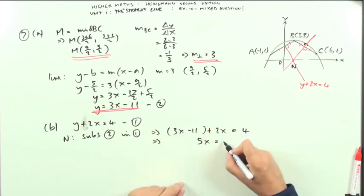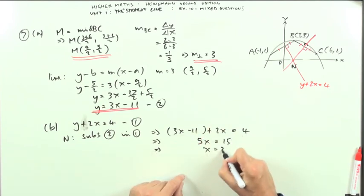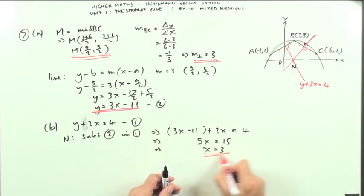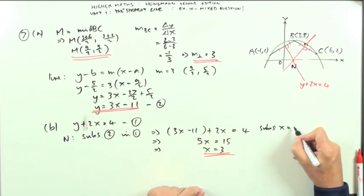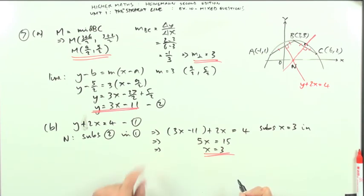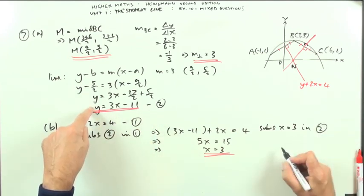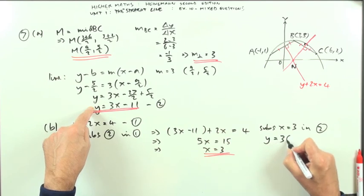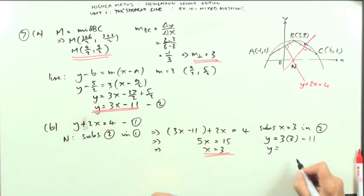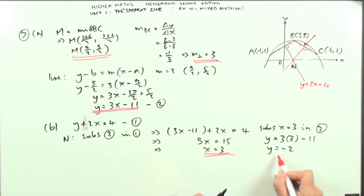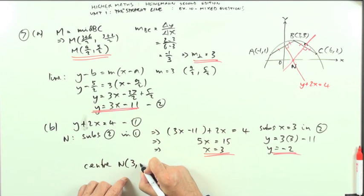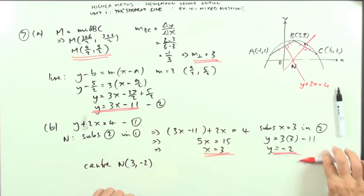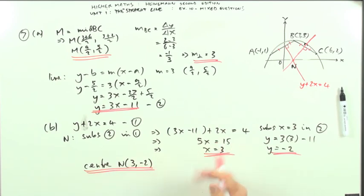Take the 11 over: 5x equals 15, which means x equals 3. That's directly below B. Now substitute x equals 3 into whichever equation is more convenient - equation 2 reads y directly. Y equals 3 times 3 minus 11, so 9 minus 11, that's negative 2. So for this circle, its centre N is at 3, negative 2. That's question 7.